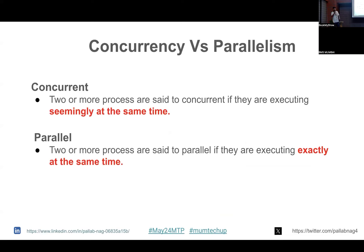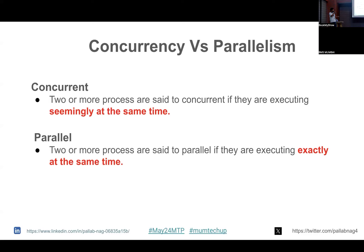The first thing that comes to mind when talking about concurrency is concurrency versus parallelism. What is concurrency and what is parallelism? Two or more processes are said to be concurrent if they are executing seemingly at the same time. Two or more processes are said to be in parallel if they are running exactly at the same time. The key difference is that word 'seemingly' versus 'exactly.'